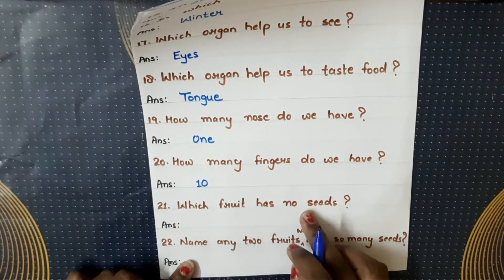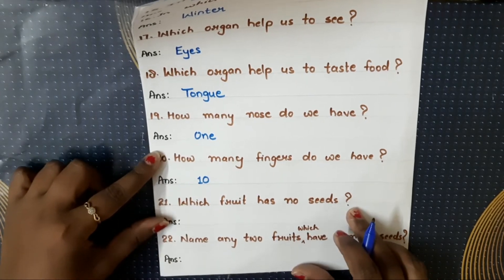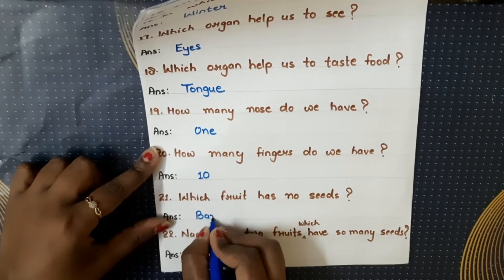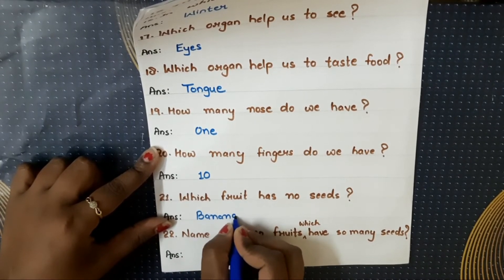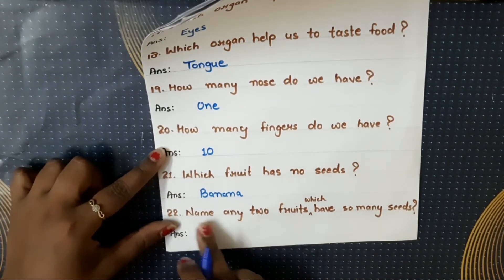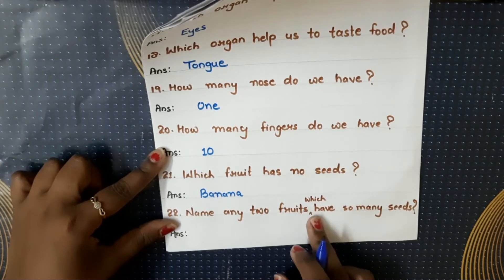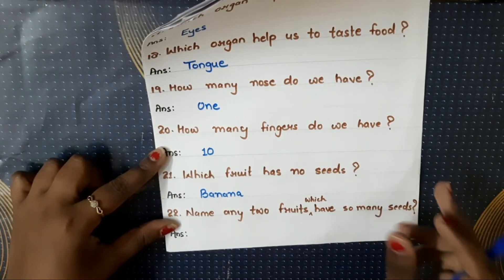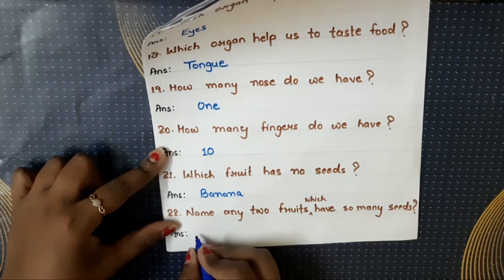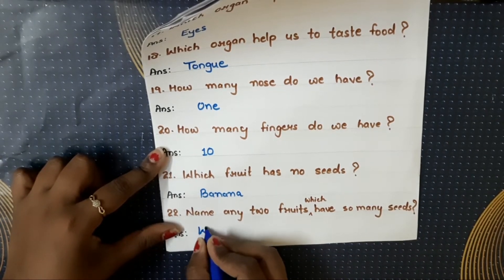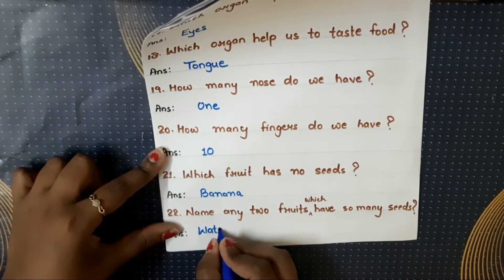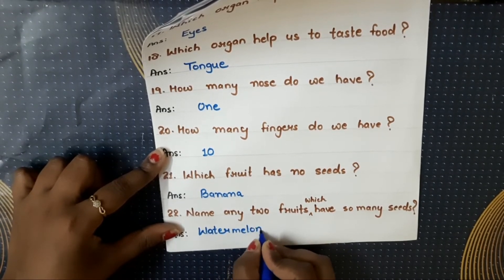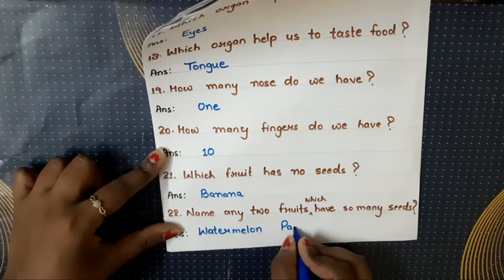Which fruit has no seeds? Kaunsa aisa fruit hai jis mein seed nahin hoti? The answer is banana. Name any two fruits which have so many seeds. Aise two fruits batane hain jis mein bohot saari seeds hoti hain. So the answer is watermelon and papaya.